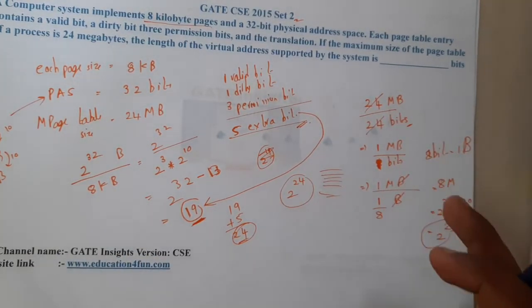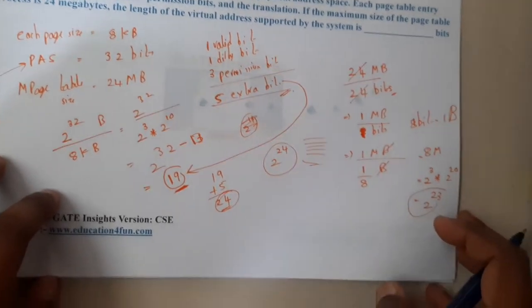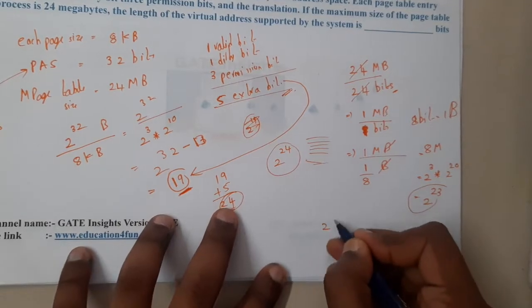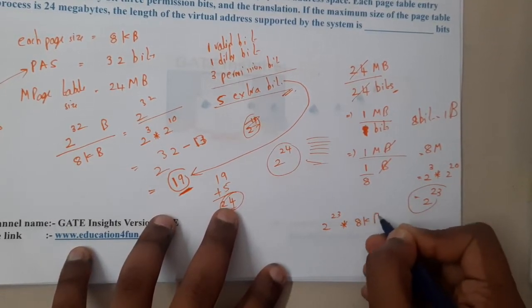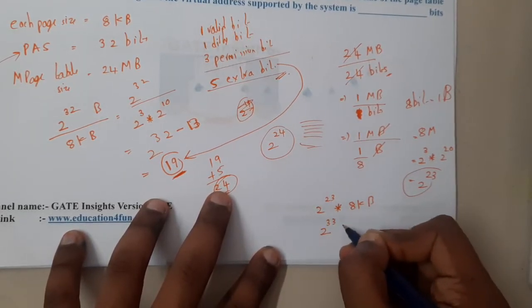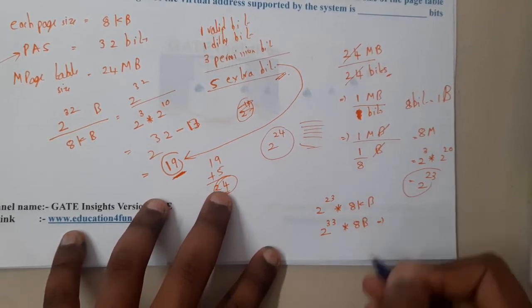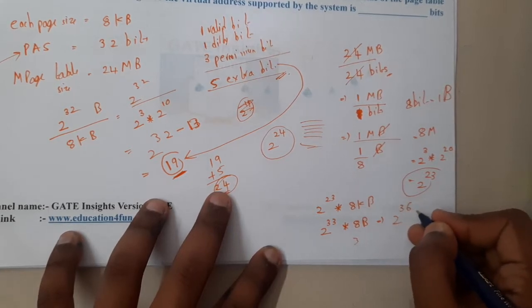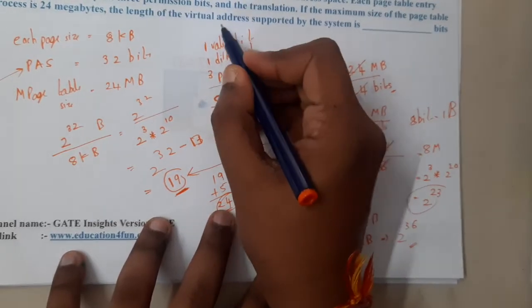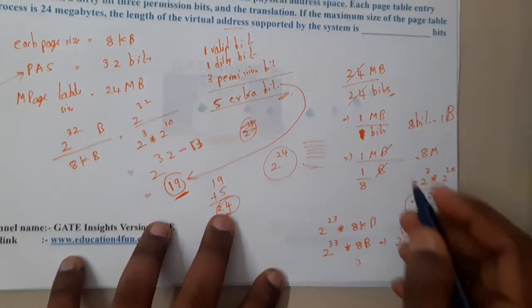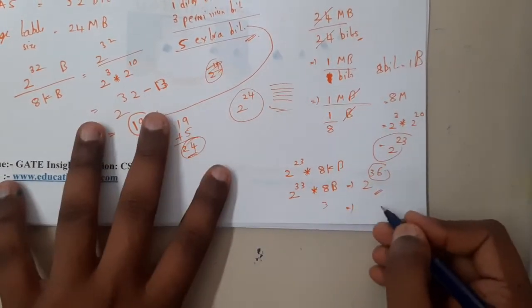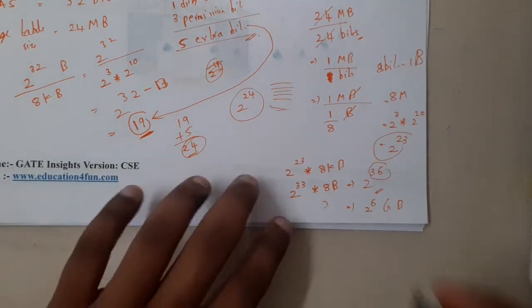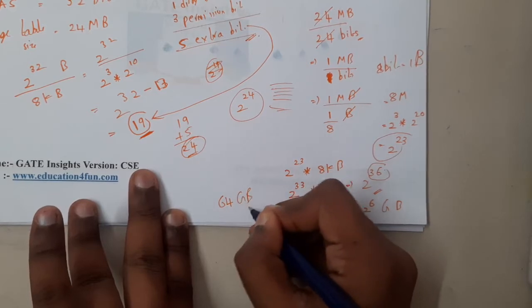Now the question asks for the virtual address length. We multiply the number of page table entries by the page size: 2^23 times 8 KB equals 2^23 times 2^13, which is 2^36. So the virtual address length is 36 bits. If they ask for the size, it is 2^36 bytes, which is 2^6 GB — that is 64 GB of virtual memory.